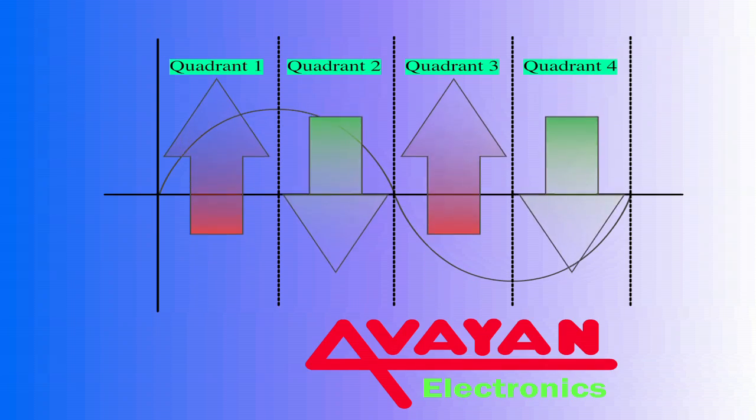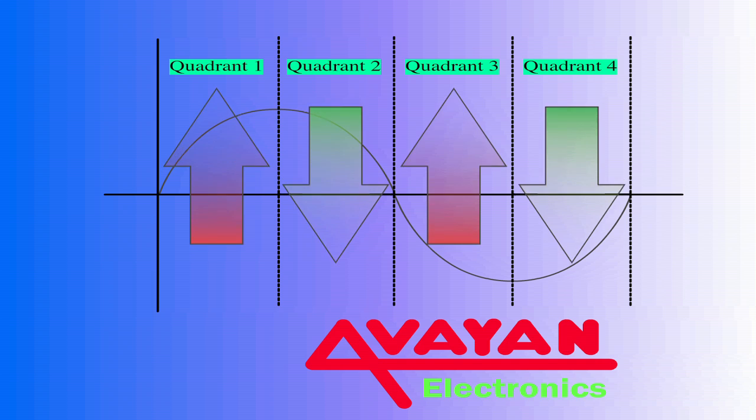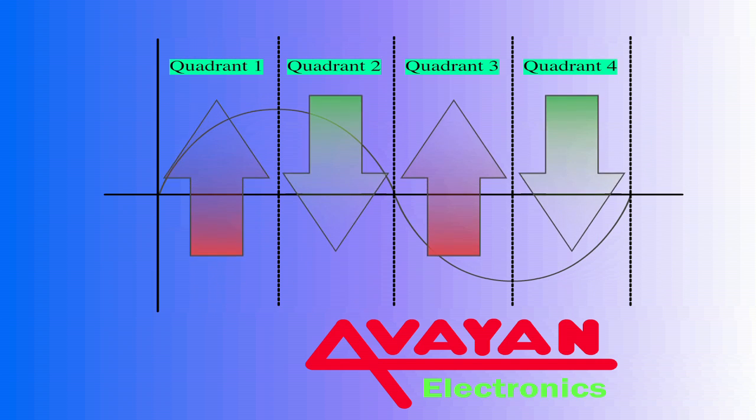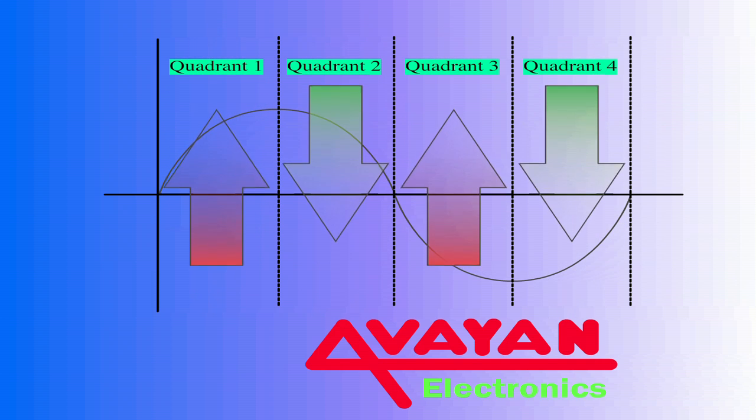For example, as you can see on my little drawing here, on quadrants one and three, you are charging the current, that means that the current is increasing in the winding. But, in quadrants two and four, the current is decreasing in the winding.